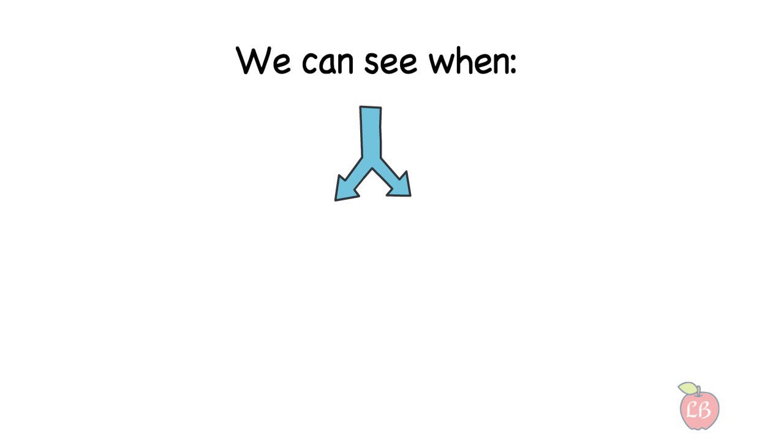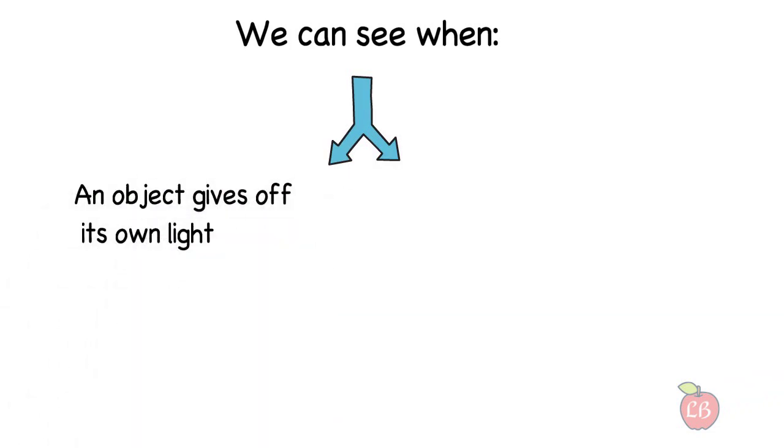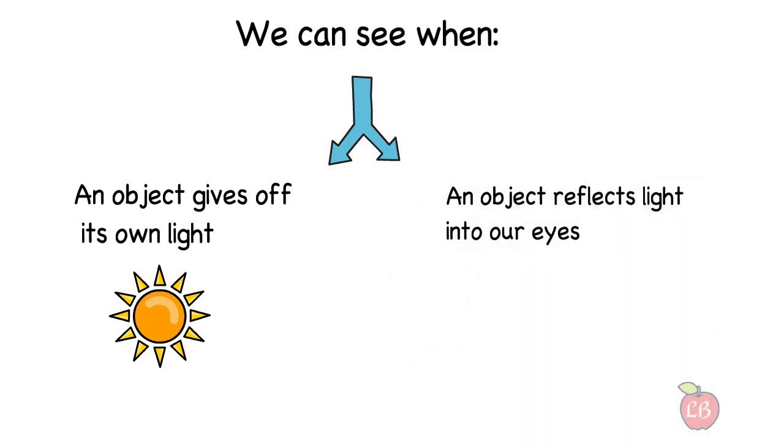We can see when an object gives off its own light, like the Sun, or when an object reflects light into our eyes.